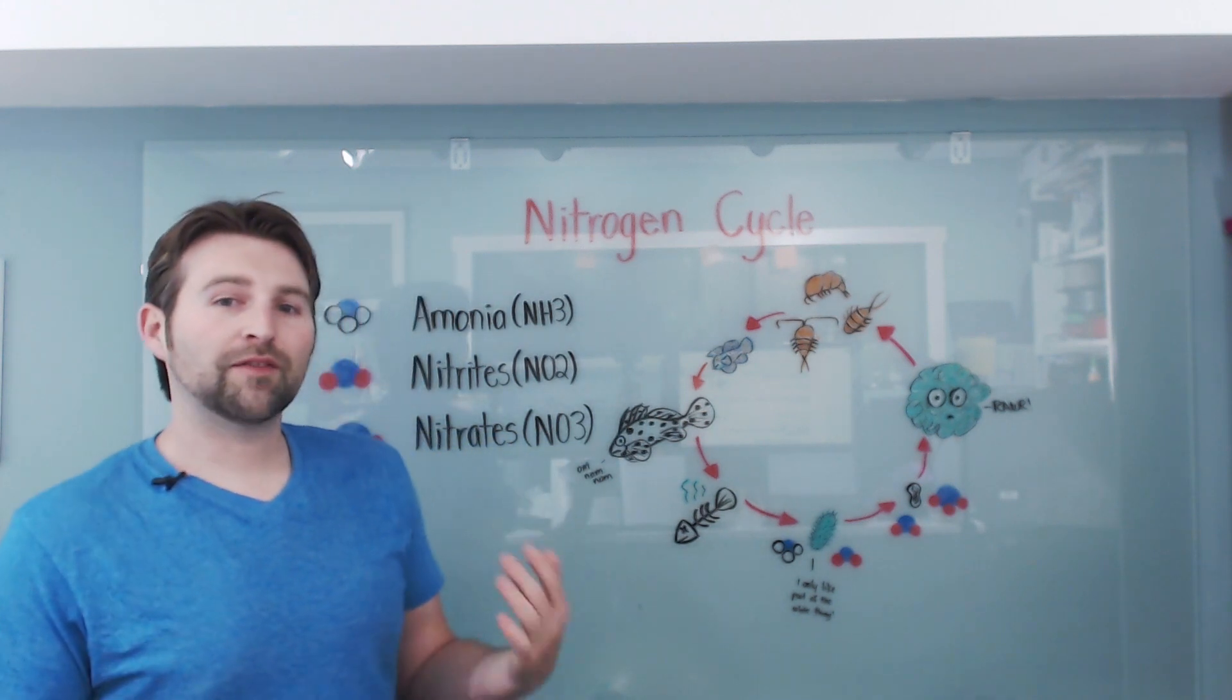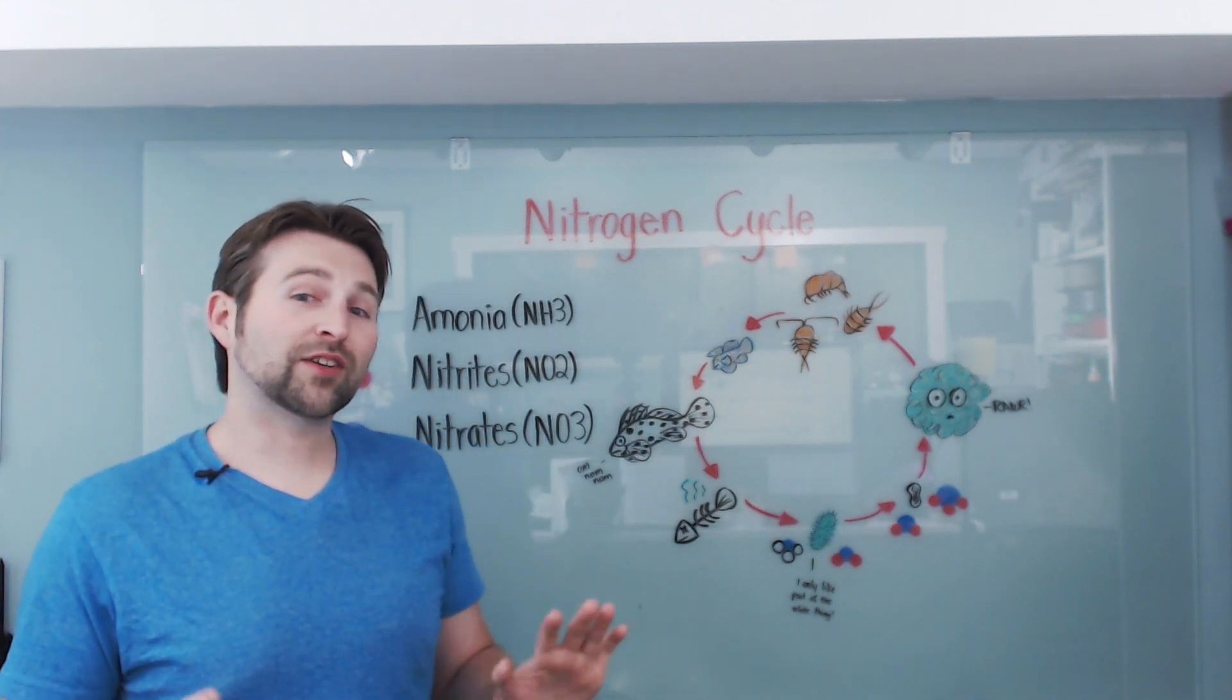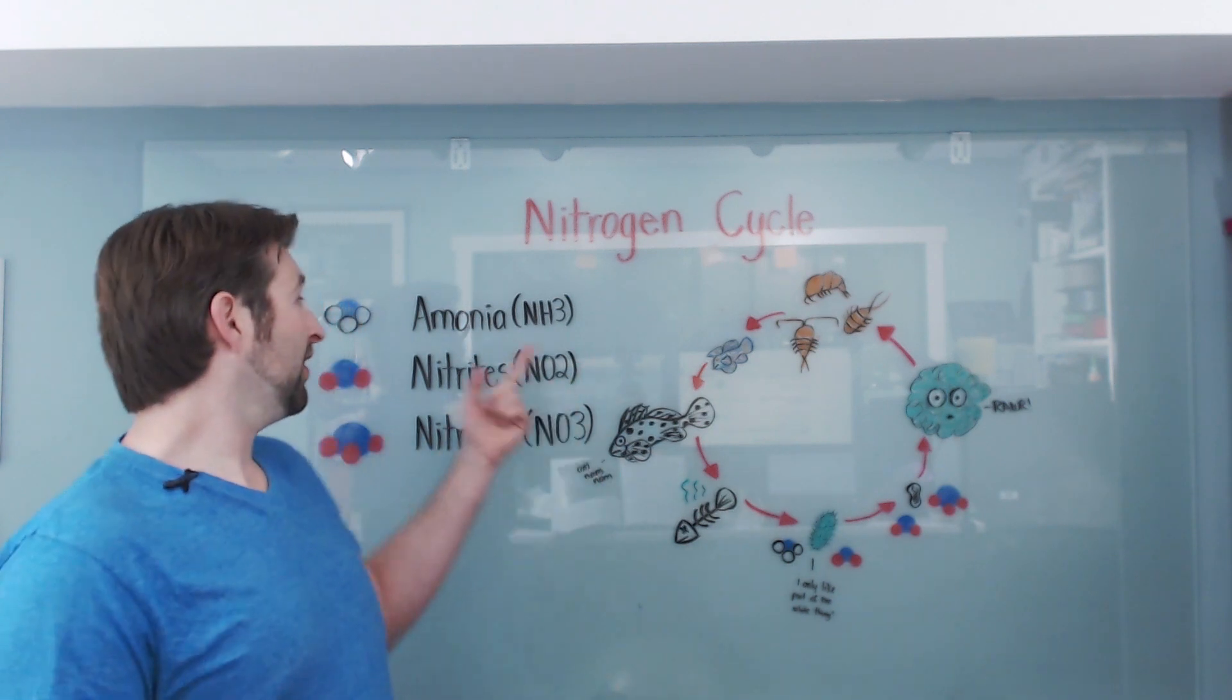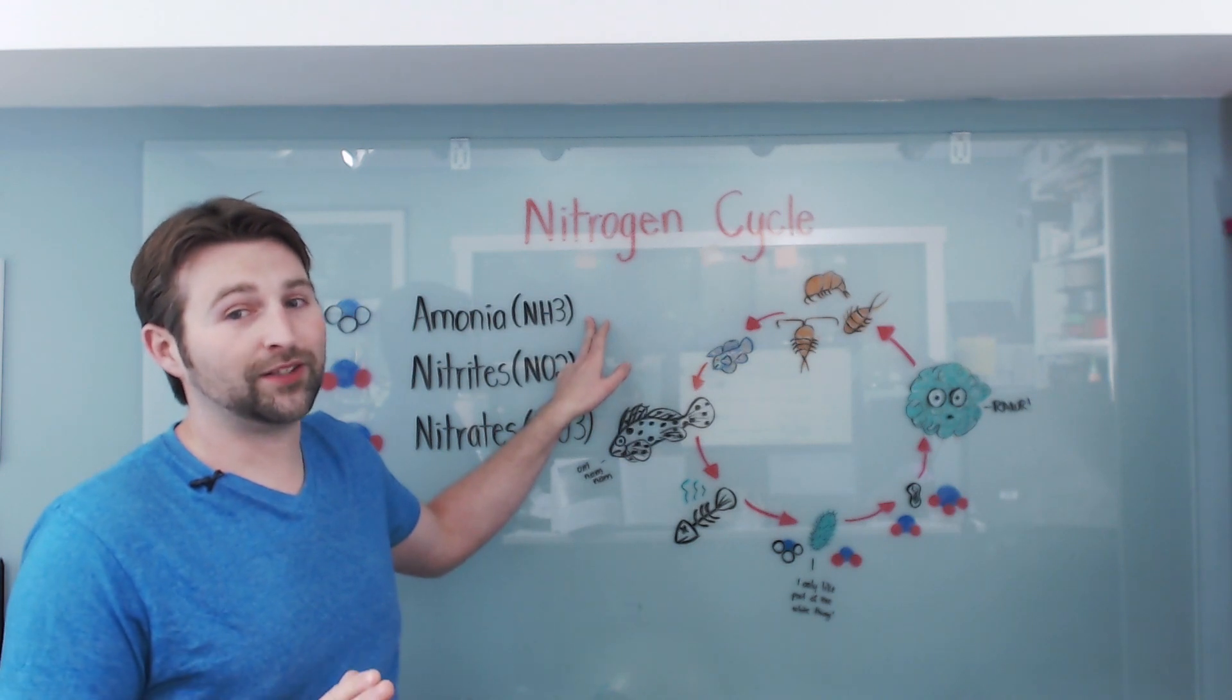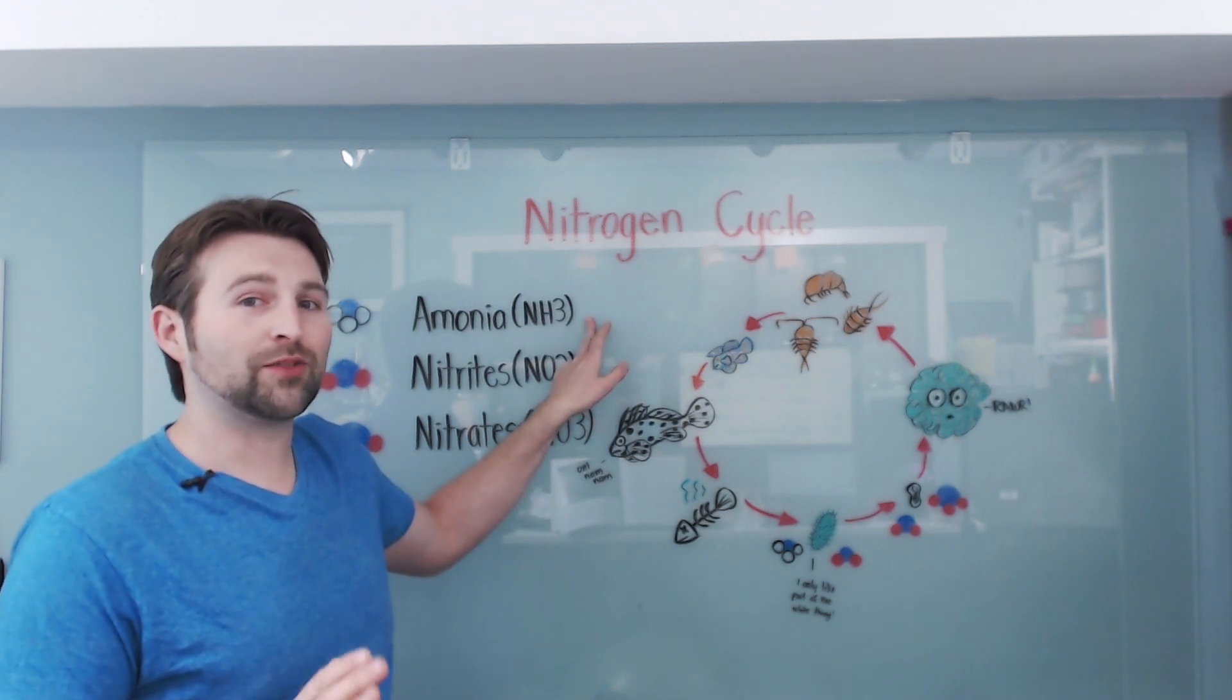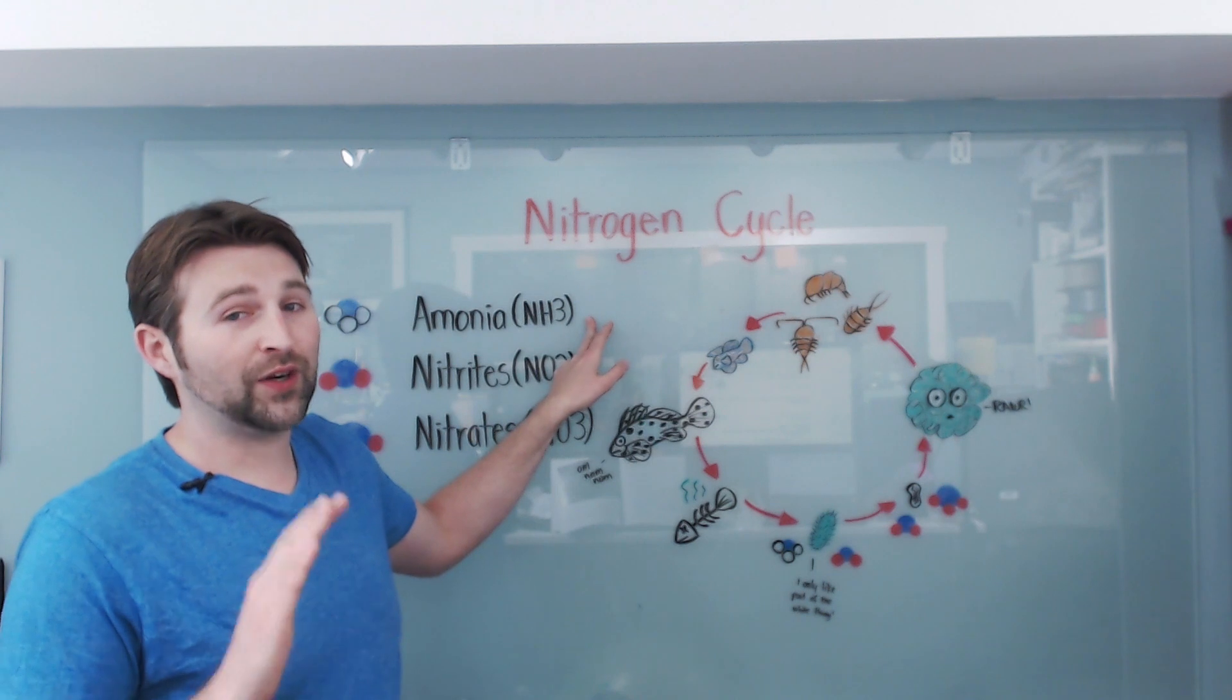If you just put a fish into a brand new tank, it is extremely dangerous, it's going to harm them. Ammonia is a very toxic chemical and it will burn the gills and potentially stress or kill your fish. It's a very cruel thing to do, so you really need to make sure you properly cycle your tank. Very, very important.